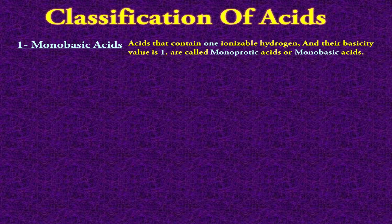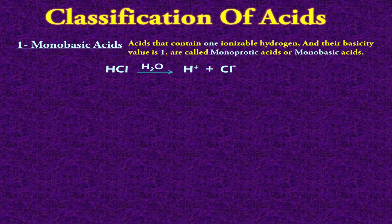Now on this basis, we can classify acids into different classes. The first is monobasic acid — acids that contain only one ionizable hydrogen ion, with a basicity value of 1. These are called monobasic or monoprotic acids. For example, HCl, when dissolved in water, gives only one hydrogen ion and one chloride ion, so its ionization takes place in one step.